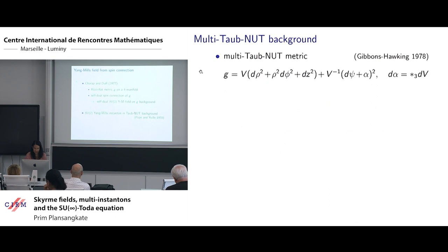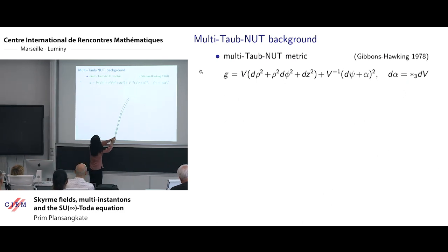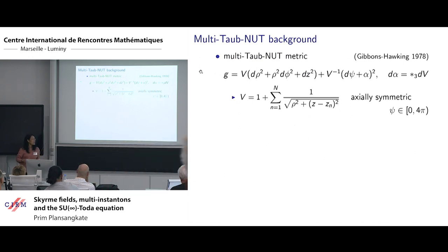My work is to apply the procedure to multi-Taub-NUT instanton. This is the multi-Taub-NUT metric. The flat metric in cylindrical coordinates. V is a harmonic function and alpha is a one form which are related to V. In this work, I will look at multi-Taub-NUT metrics with axial symmetry.